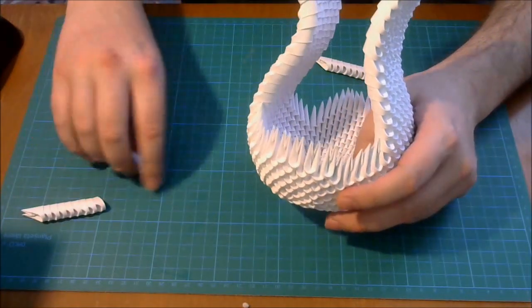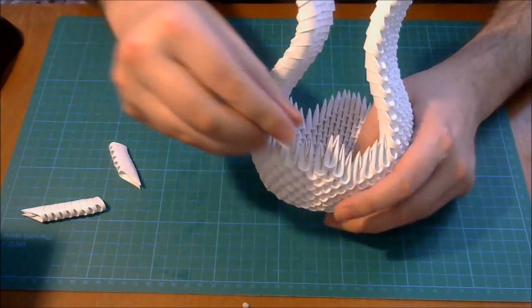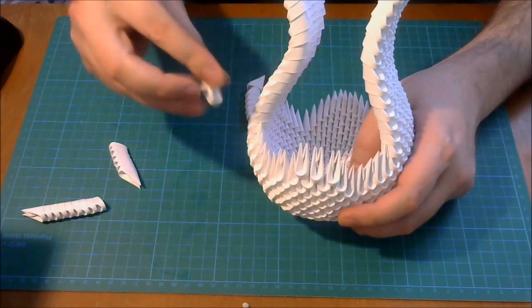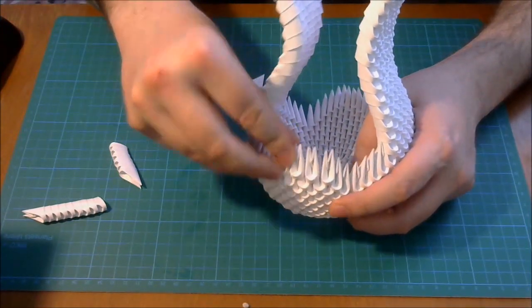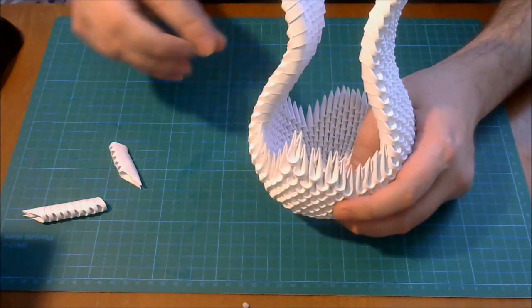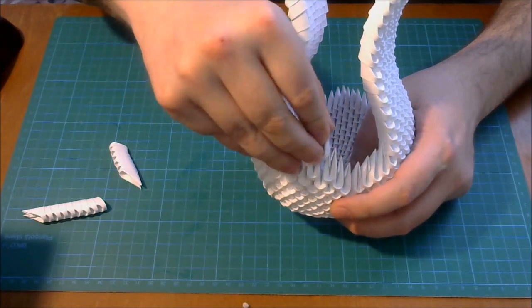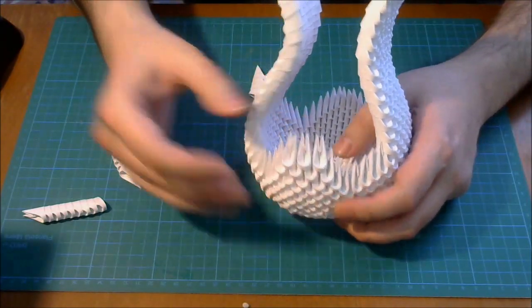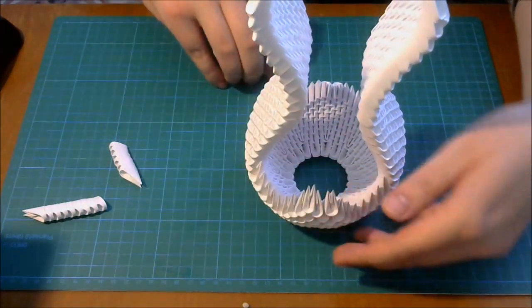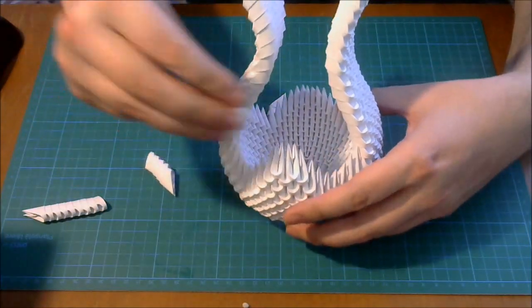Next, we make the tail. Very simple, we put four pieces here. Then we put three. Don't forget to glue. And two. And at the end one.